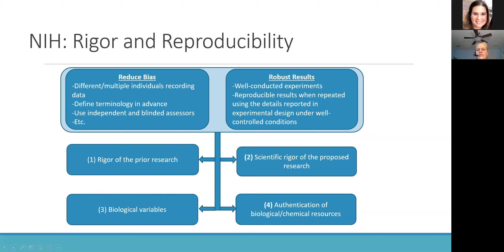The NIH has identified four key areas to address in any grant application. The first is the rigor of the prior research, which requires careful assessment of the strengths and weaknesses of the key supporting evidence describing what motivates our project. Anytime you're describing your significance, you want to say what the prior science has shown and where the gaps are — in that way you are addressing the rigor of the prior research. It can also pull in additional concepts like biologic variables, experimental design, and all these other aspects.